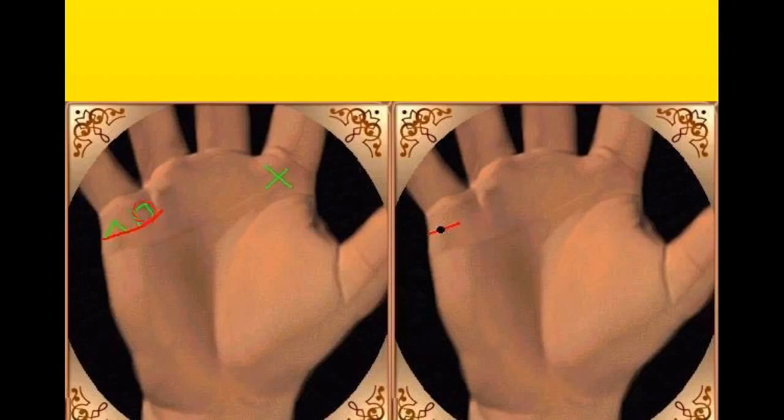This square is always a very positive sign which shows protection from God in family life. Also, triangle shows money and this cross on the mount of Jupiter is also a wonderful sign.